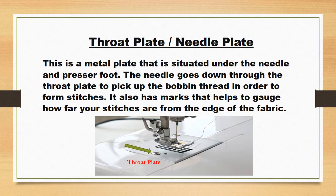Throat Plate, also known as the Needle Plate. This is a metal plate that is situated under the needle and presser foot. The needle goes down through the throat plate to pick up the bobbin thread in order to form stitches. It also has marks that help to gauge how far your stitches are from the edge of the fabric.